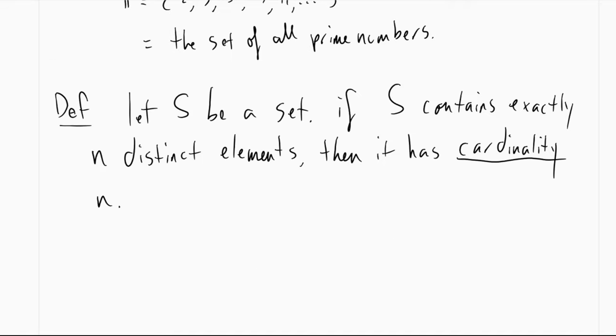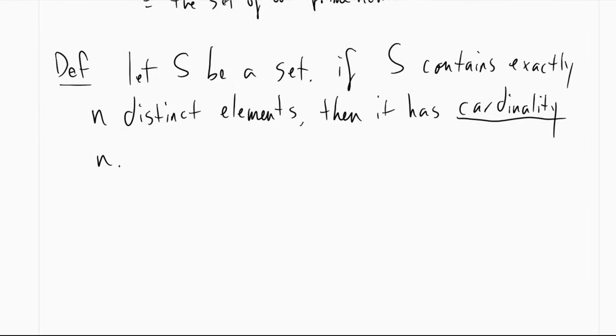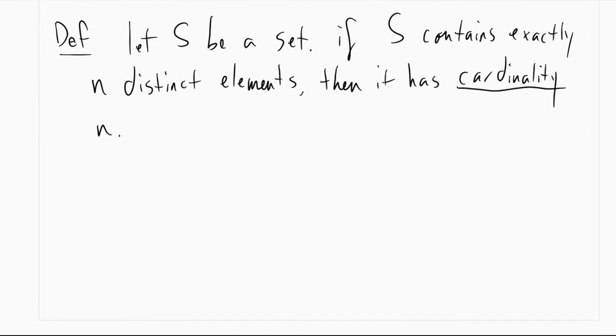So moving on to a slightly new concept. We talked about before that one of the big properties we really care about with sets is whether they contain certain objects or don't contain certain objects. And this kind of leads into another property which talks about how many objects a certain set contains. So this brings us into our definition of cardinality, which is displayed up on the screen. We'll let S be a set. If we can say that S contains exactly n distinct elements, then it has cardinality n.